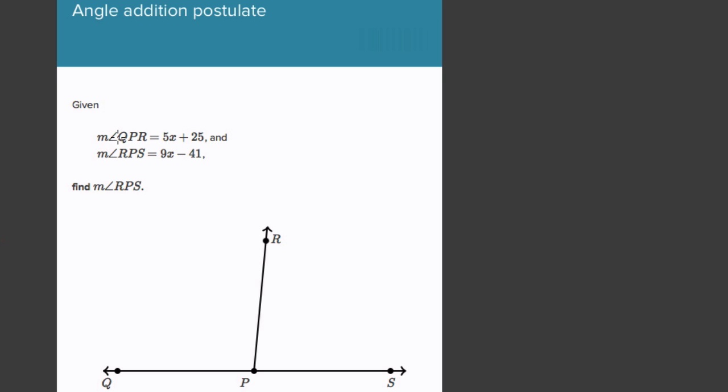For example, in this problem we're given the measure of angle QPR, so this M means measure of angle QPR, is 5x plus 25, and the measure of RPS is 9x minus 41. Then we're going to find the measure of angle RPS. So here we're given these two things, and we have a straight line.